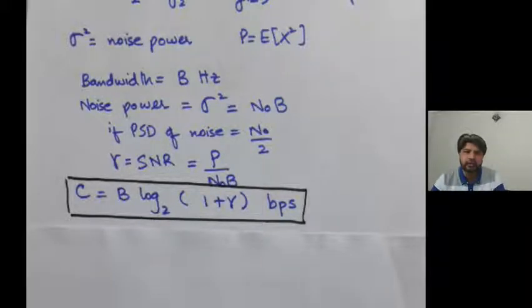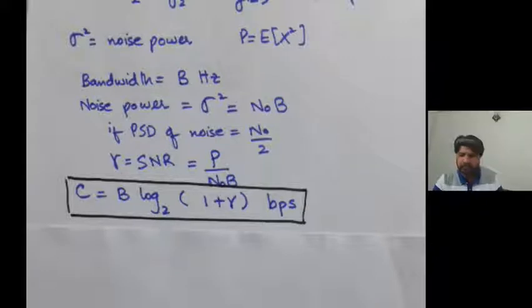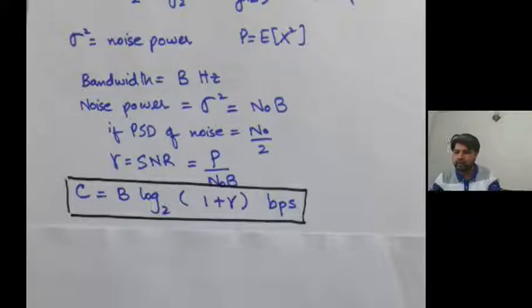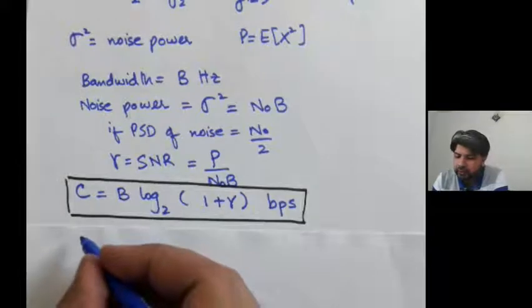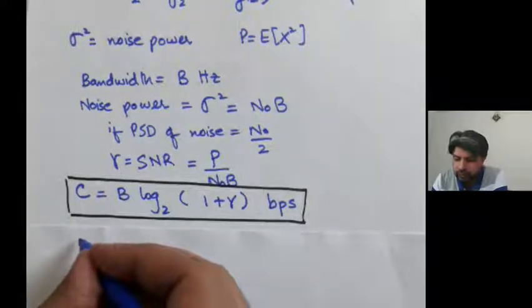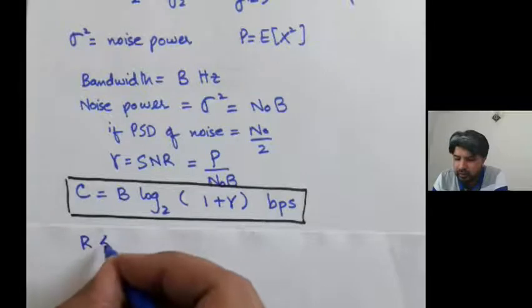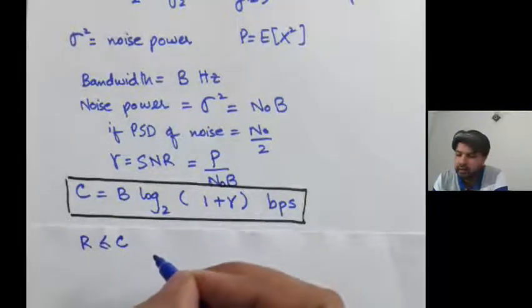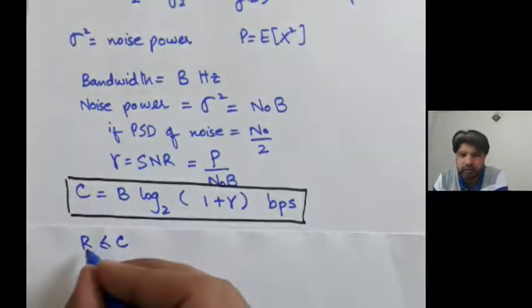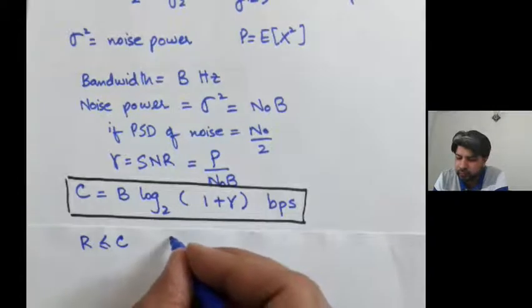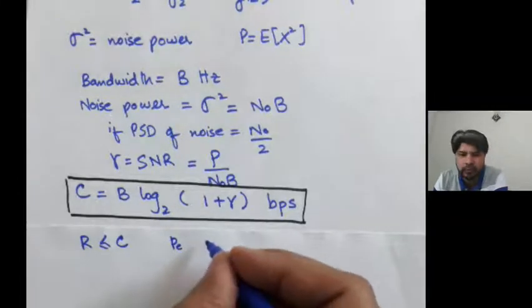We have been discussing channel capacity and ergodic capacity. When we say the channel capacity is C bits per second, what channel theory proved was that if C equals B log base 2 of (1 + gamma) bits per second, that means if you transmit at a rate r less than or equal to C bits per second, then there exists a code for which you can transmit this information with probability of error negligibly small.